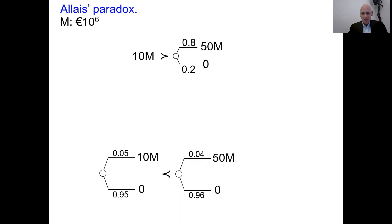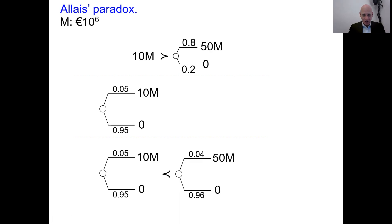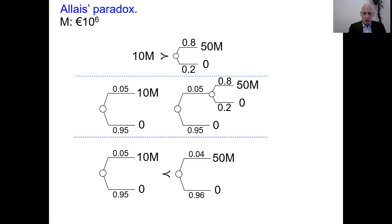To show my argument, I'm going to use a middle choice situation. The left option in the middle choice situation is the same as in the lower: a 0.05 probability of 10 million. The right option is a two-stage lottery: with 0.95 probability you get nothing, but with 0.05 probability you proceed to a distribution of 0.8 probability of 50 million or otherwise nothing.